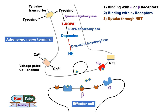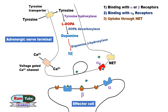Third, most of the norepinephrine is taken back into the pre-synaptic nerve through another transporter known as the norepinephrine transporter, and from there it can be transported into the pre-synaptic vesicles for storage. This transport can be blocked by cocaine-like drugs.